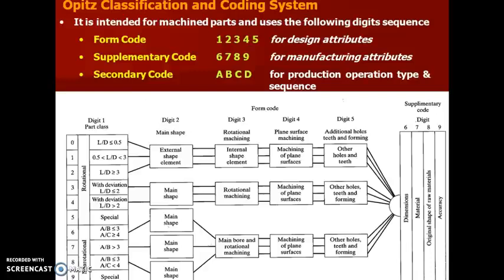Here I will discuss a classification system called the OPITZ classification and coding system. It is intended for machine parts and uses the following digit codes. The first is the form code, which has five digits intended for design attributes. The second is the supplementary code, which has four digits intended for manufacturing attributes. The third is the secondary code, which uses alphabets for production operation type and sequence. You can see the form code and supplementary code explained here.